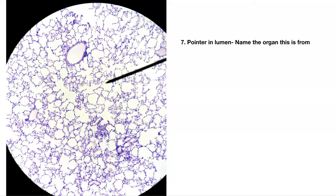First name the epithelial tissue and its function in this location. Nothing else looks like this — what organ is this from? Not the type of epithelial tissue, just what organ is this from? Nothing else looks like this.